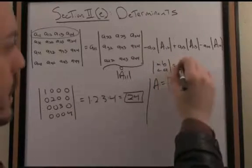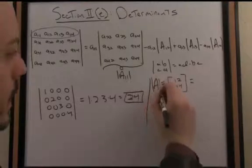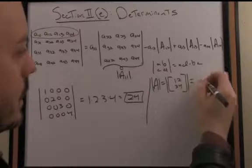Essentially, we go AD minus BC. The determinant of that particular matrix, let's put the vertical lines around it just to be proper here, is 4 minus 6 or negative 2.